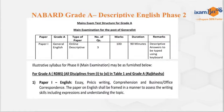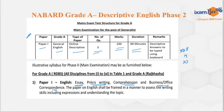When we talk about the examination pattern, this is taken from last year's notification. Here you can see general English, online descriptive, 300 marks, 90 minutes. In detail, it was written essay, précis writing, comprehension, and business or office correspondence. In 2018, 19, or 20, if you see, there used to be four questions: essay, précis, RC, and letter or report writing.